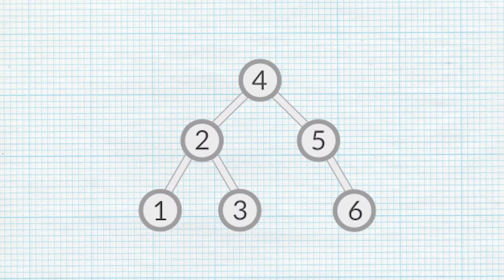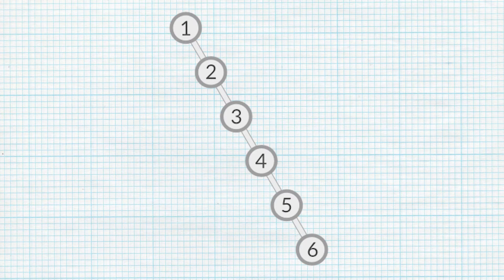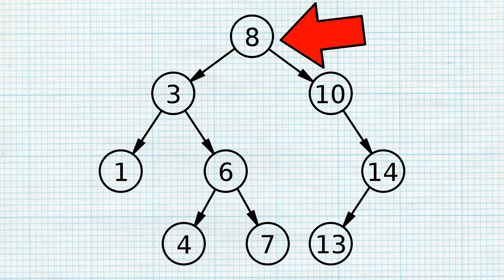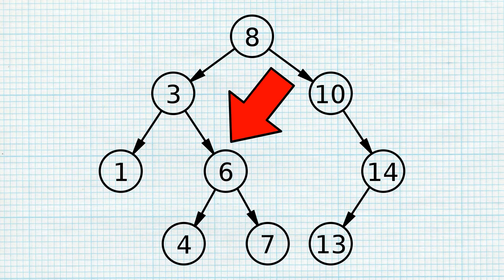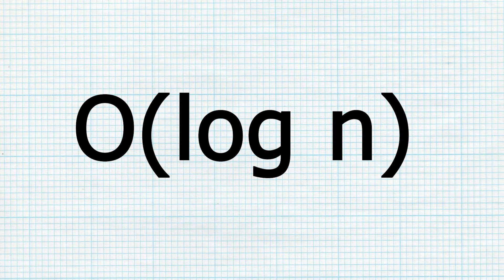For example, if we wanted node 6, we start at 8, the root node. Since 6 is smaller than 8, we go left. Now we are at 3; since 6 is greater than 3, we go right, and we find the node we are looking for. The n is still present in the Big O notation for binary search trees because the size still impacts scalability. The log represents the fact that, unlike linear time structures, the data is ordered in a way that enables us to search strategically rather than sequentially.